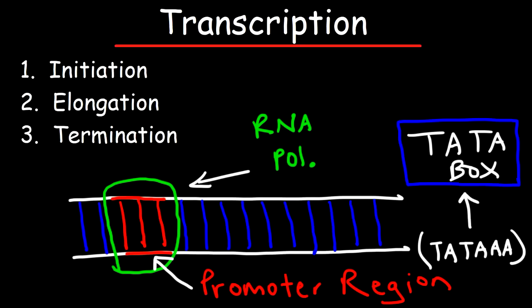Transcription occurs in three steps: initiation, elongation, and termination. During initiation, RNA polymerase binds to the promoter region of DNA. The promoter region is basically a short sequence of DNA. In eukaryotic DNA, it's TATAAA, also known as the TATA box. This sequence is located 25 nucleotides upstream of the site where transcription begins.